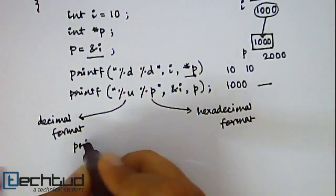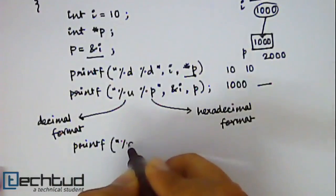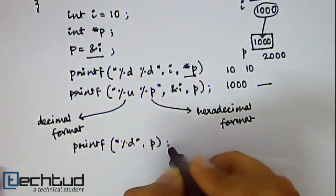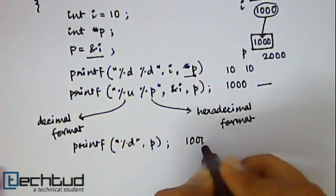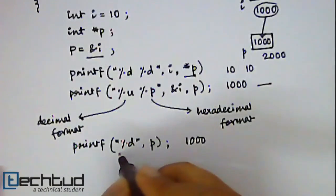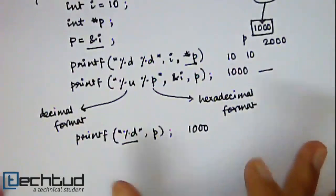Now, if we use %d to print the value of p. It will print 1000 but if the value of the memory location you already know it is unsigned int. So the range of unsigned int is greater than the range of int. So if the value exceeds the range of int then this will give you wrong answer. But for this case it will give you correct answer which is 1000.